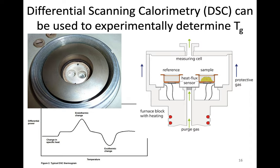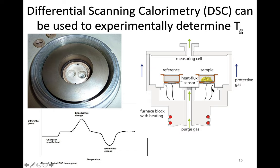DSC is used to experimentally determine Tg. The way it works is we have a furnace — in this case, actually two — and they're separated. We have one container known as the reference, where we keep either nothing or some material that mimics the sample. That's separated from the sample furnace, where we put the material of interest. Both are resistively heated — you can see the little wires underneath. This is all contained in an inert protective atmosphere, with purge and protective gas flowing through so things don't burn.